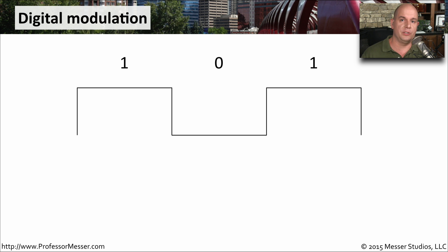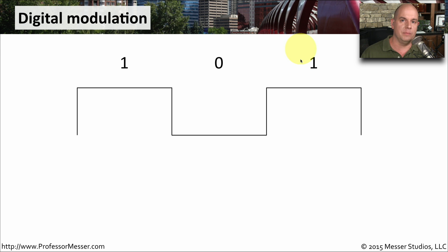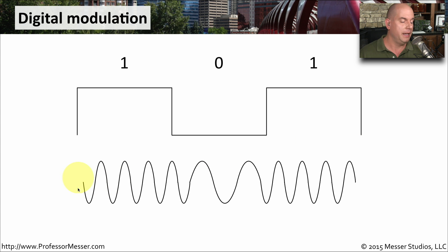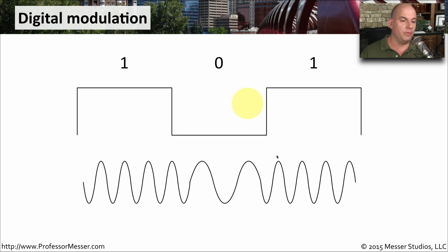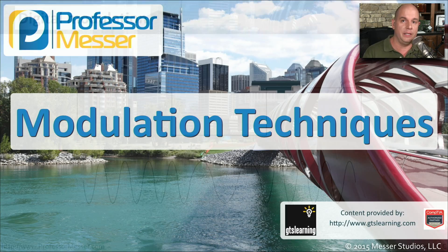When sending digital signals over an analog channel, you have to convert the digital wave — with its ones and zeros — into something that can be sent over the analog medium using sine waves. One way to do this is to have a tighter wavelength for a one, a longer wavelength for a zero, and then back to a shorter wavelength for another one. You can send this over the analog channel, receive it on the other side, and reinterpret those sine waves back into ones and zeros for digital communication.